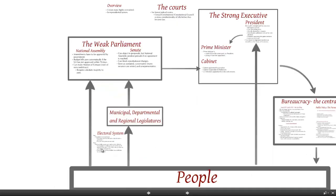If we look at the parliament, there is a direct election to the National Assembly. There is not a direct election to the Senate. Instead, the people elect municipal, departmental, and regional legislatures, and these bodies appoint members to the Senate. So that's an indirect form of representation.